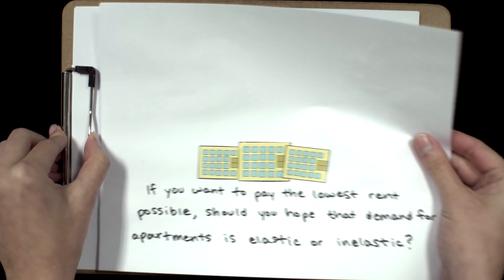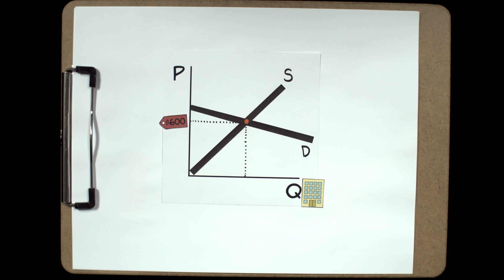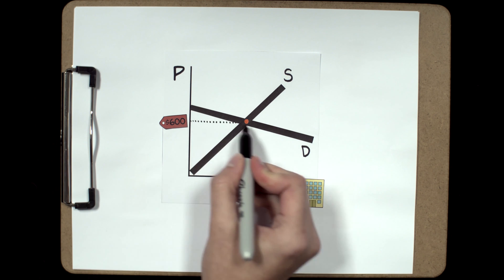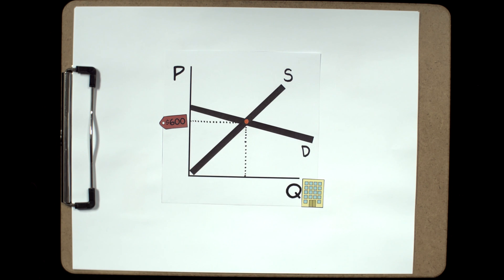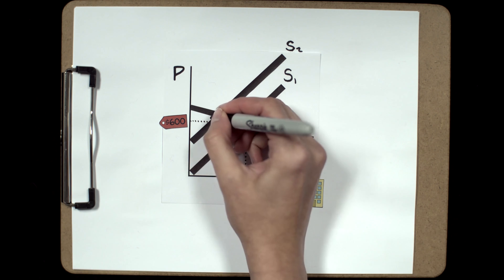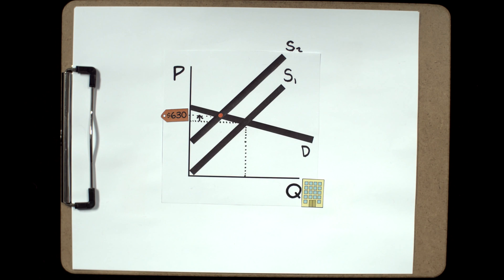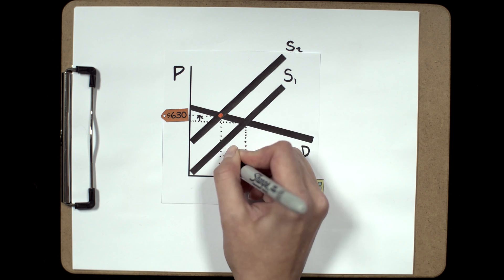We'll use the same approach we used last time. First, suppose demand is very elastic. If apartments are suddenly condemned, then in the short run this causes a rapid drop in the supply of available apartments and the supply curve shifts back. Our new equilibrium price is slightly higher and the quantity is much lower.